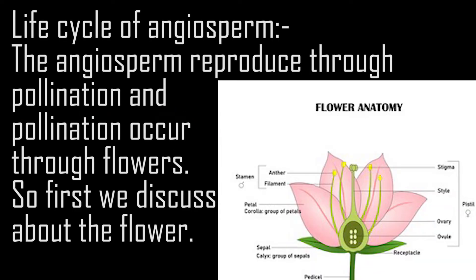Life cycle of angiosperm. The angiosperm reproduce through pollination, and pollination occurs through flowers. So first we discuss about the flower.